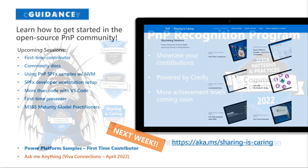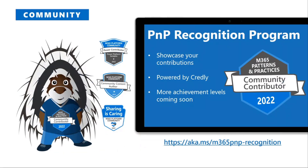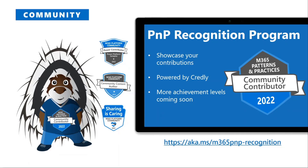Once you have contributed at many levels, we want to celebrate that. The recognition program is here to provide formal and official recognition for all the amazing work you are doing. It's powered by Credly — the same organization that provides certification badges from Microsoft when you get certified — so all of your community contributions will sit right next to them. You can attach them to your LinkedIn, share them on Twitter, put them on your website, share them with your manager. We do need you to opt in at aka.ms/m365pnp-recognition. We'll tie that to your GitHub account and send those badges out.